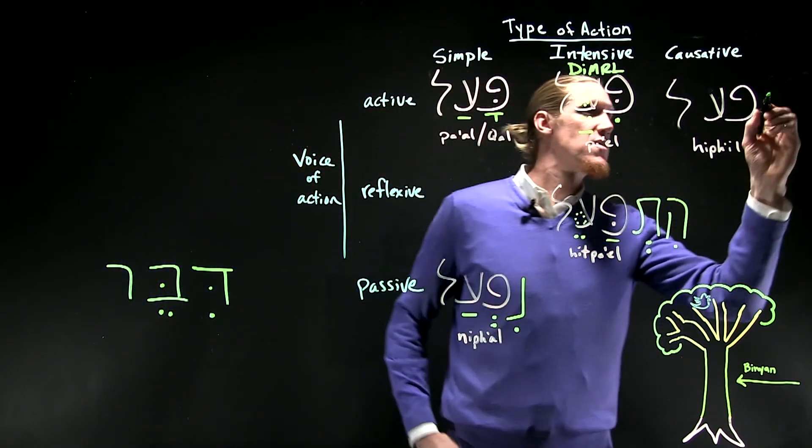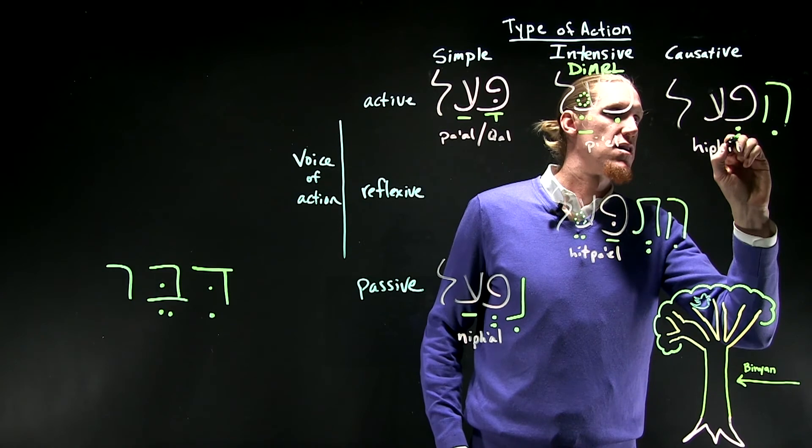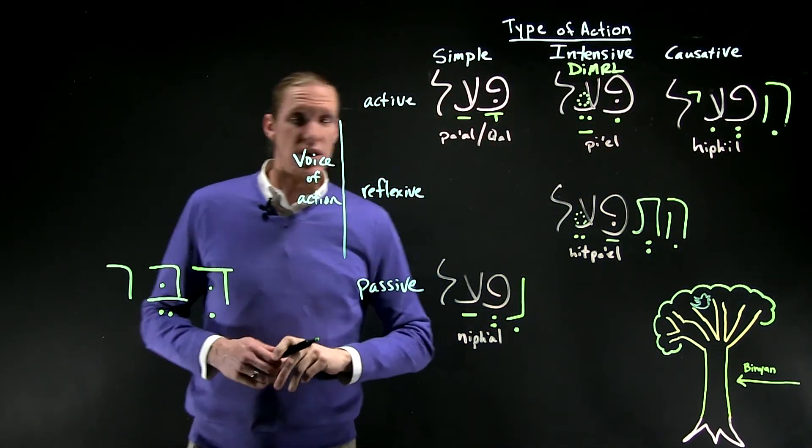Finally, the hif'il, which is the causative stem, has two pretty clear signs.